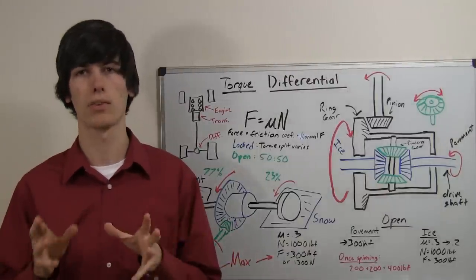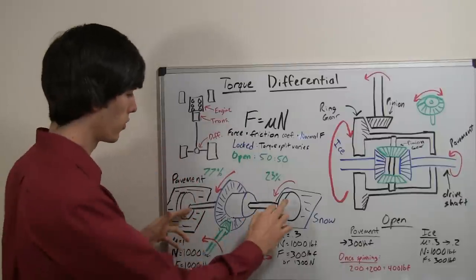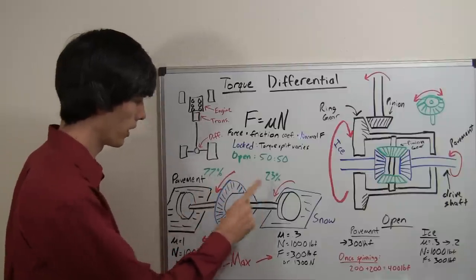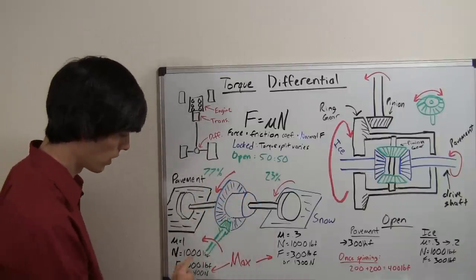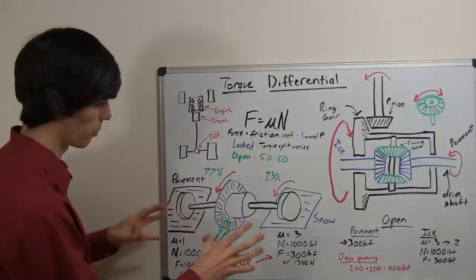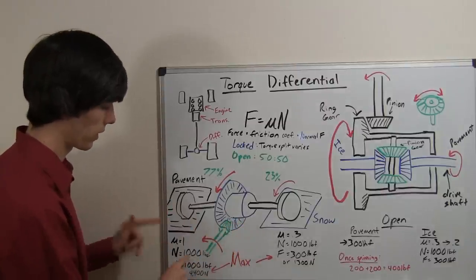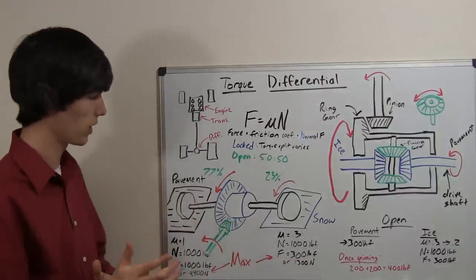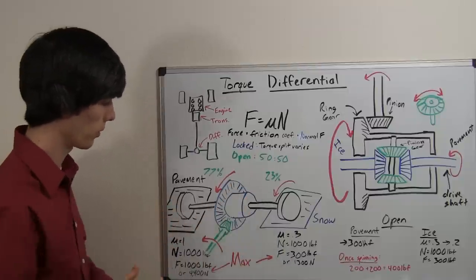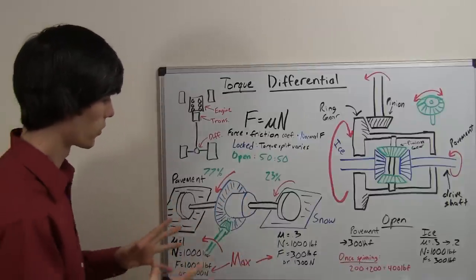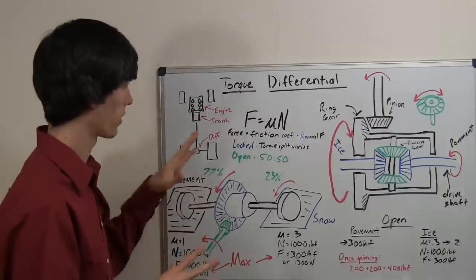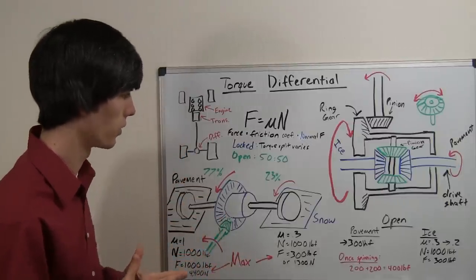So the maximum that this locked differential can apply to the ground: since the pavement side can handle 1,000 pounds and the snow side can handle 300 pounds, the maximum total is 1,300 pounds of force. If you were sending the maximum possible force to these two tires, this one will get 77% of the torque and this one will get 23%. Where does 77% come from? 1,000 plus 300 equals 1,300 total — 1,000 divided by 1,300 is 77%; 300 divided by 1,300 is 23%. That's how torque distribution works with a locked differential.